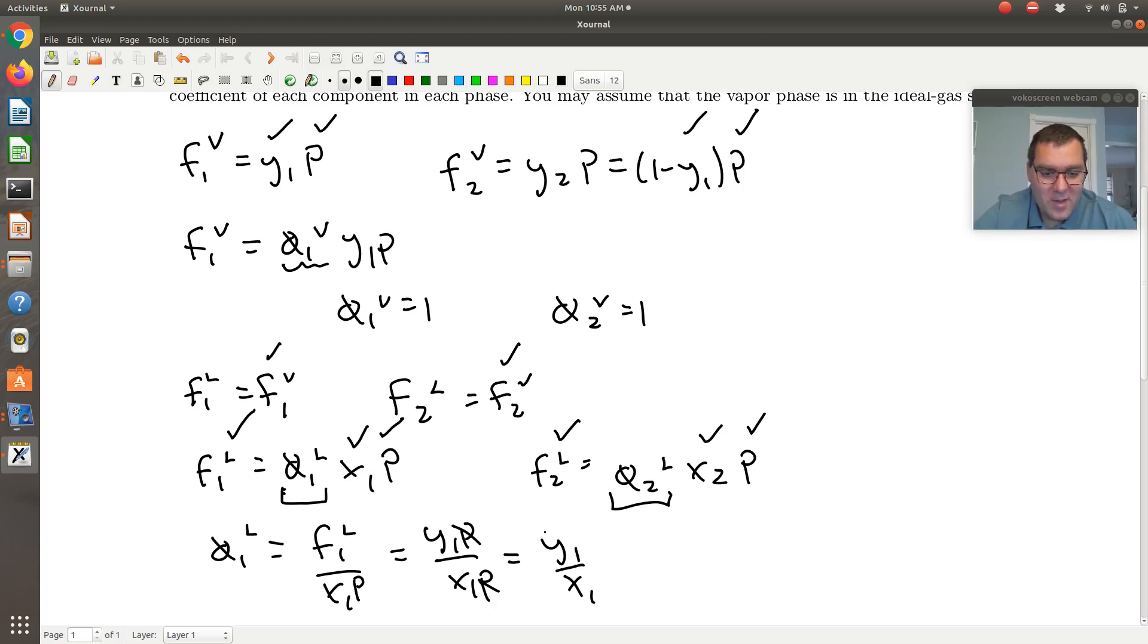And then the other thing is Y1 is greater than X1, so I know that phi1L is going to be greater than 1. So phi1L will be greater than 1, and it's kind of cool that phi1L is just the ratio of Y1 over X1 when we can assume that our vapor phase is an ideal gas. That is, in my opinion, really cool.